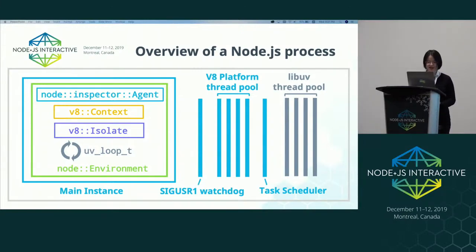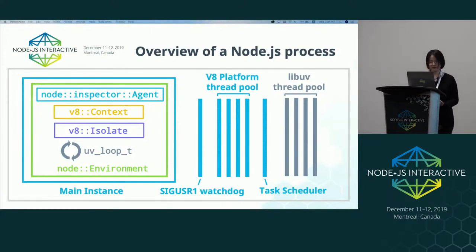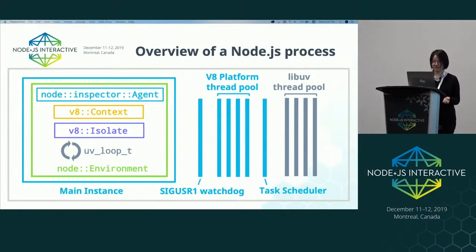So in a Node process, you usually have one main Node instance running on the main thread, which includes an inspector agent, a V8 context, a V8 isolate, a libuv event loop, and a Node environment. Don't worry about all those terms — if you're not familiar with them, we'll get to them later. There is also a SIGUser1 watchdog thread for handling the signal that users send to Node to make the inspector start listening on the port.